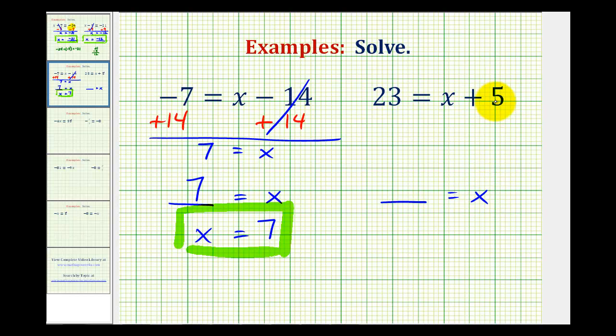We want to undo this plus 5 on the right side because it's on the same side of the equation as the variable. Well, the opposite of plus 5 would be minus 5.